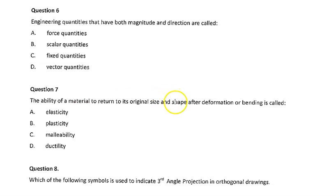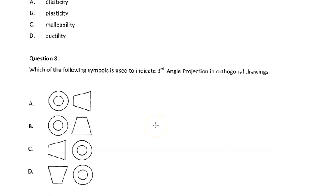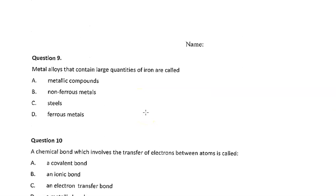Engineering quantities have both magnitude and direction are called vectors. The ability for a material to return to its original shape after deformation is called elasticity. Plasticity is when it holds its shape. Malleability and ductility are both forms of plasticity. Which of the following is a third angle projection? In Australia we use third angle projection. That means the top view on top and we use target then flag. Metal alloys that contain large quantities of iron are called ferrous metals. That's a good question.